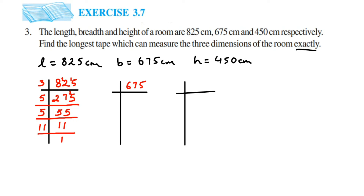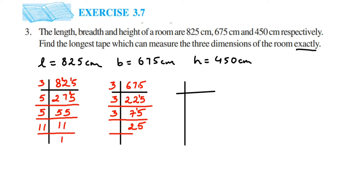Next we have 675. Starting with 3: 675 ÷ 3 = 225, then 225 ÷ 3 = 75, then 75 ÷ 3 = 25. Now 25 goes in the 5 table: 25 ÷ 5 = 5, and 5 ÷ 5 = 1. So 675 = 3 × 3 × 3 × 5 × 5. Remember we are taking only prime numbers when doing prime factorization.